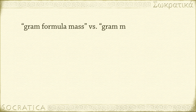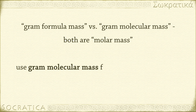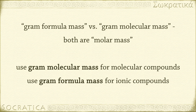Sometimes you'll hear the term gram formula mass instead of gram molecular mass. What's the difference between these two terms? Both are molar mass — you calculate them in the exact same way. But gram molecular mass refers to compounds that are molecules, like water and glucose, things that are held together by covalent bonds. Gram formula mass refers to ionic compounds. Table salt, NaCl, for instance, is an ionic compound. The representative particle of an ionic compound is called a formula unit, as opposed to a molecule. Hence the name gram formula mass.